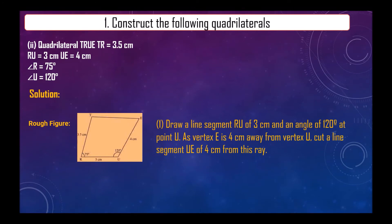So first we have drawn the rough sketch. Now we will draw a line segment RU of 3 centimeter and angle of 120 degree at point U. As vertex E is 4 centimeter away from vertex U.